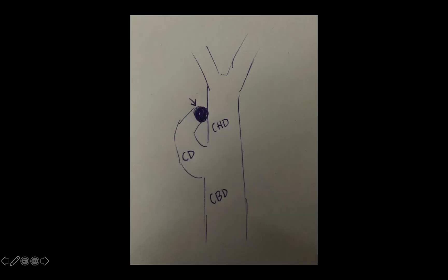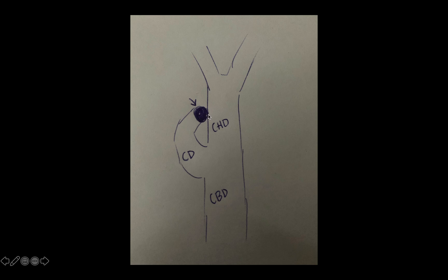With this picture I want to demonstrate that this is a 3D image, and a stone doesn't actually have to be right on the edge of the cystic duct in order to cause compression. It can be anywhere around, because the cystic duct often wraps around. So even if the stone is quite far down the cystic duct, it can still cause compression of the common hepatic duct depending on its position.